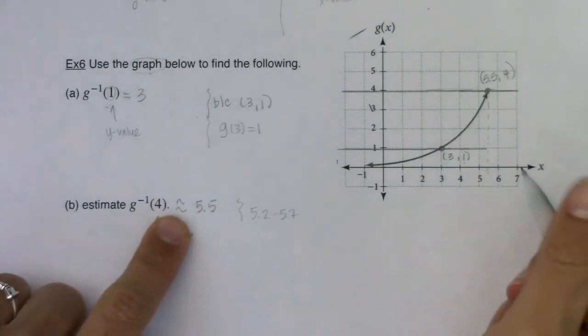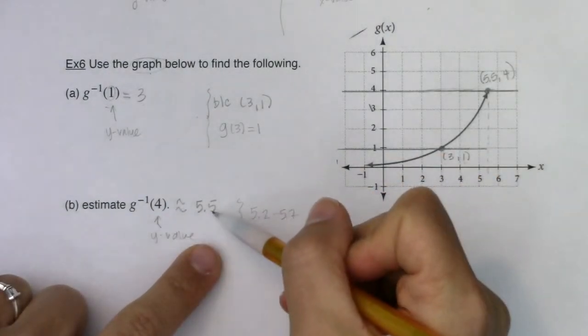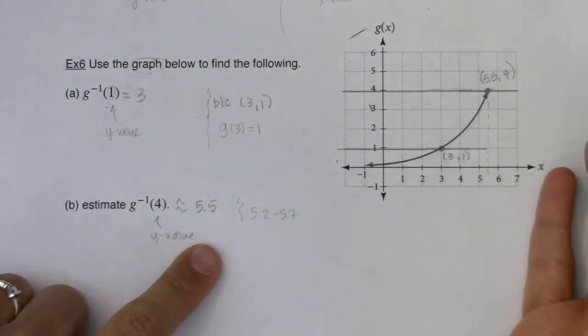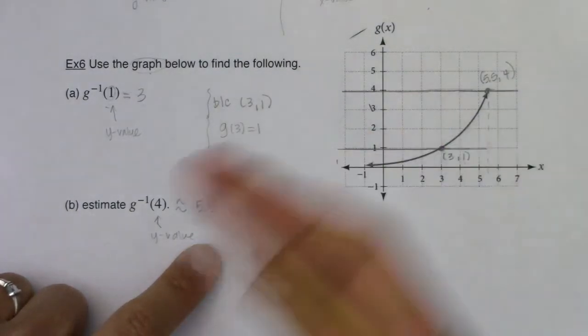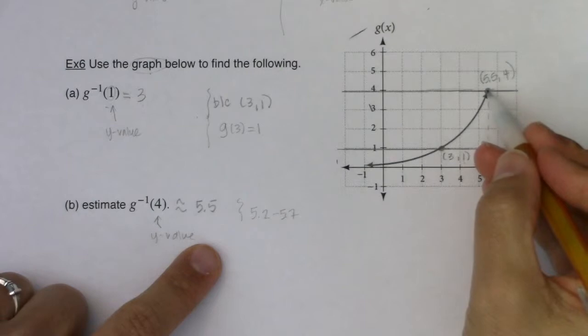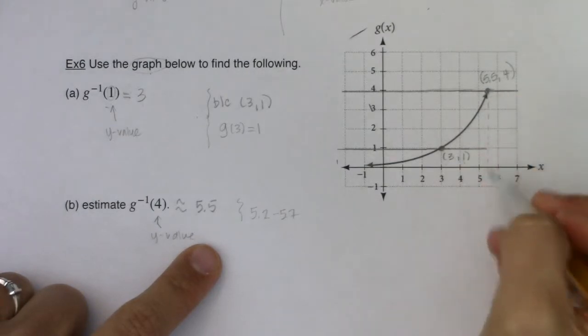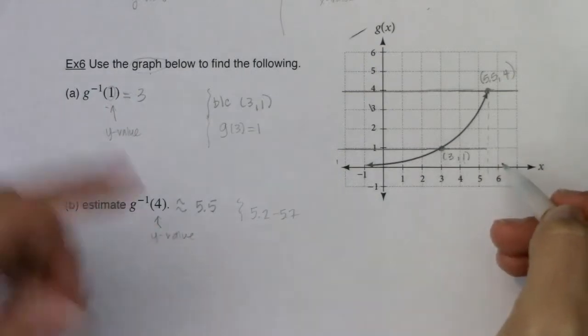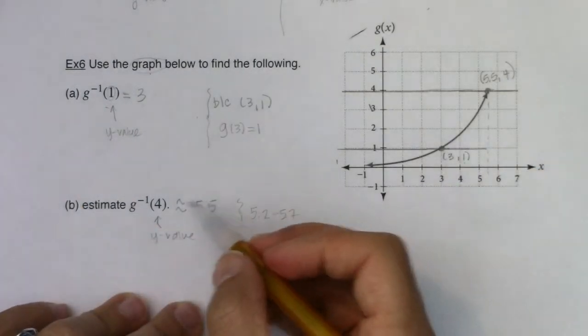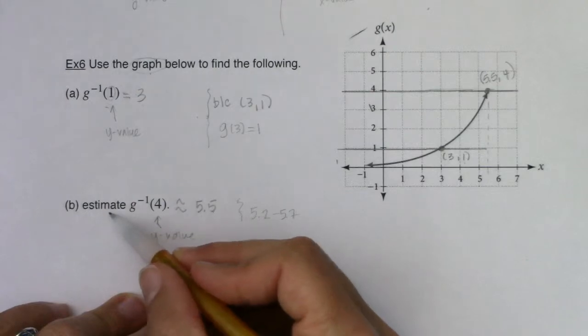So I'm estimating it. If this was on an exam, we might not all guess 5.5. Somebody might guess 5.4—great. 5.6—great. It just depends on how large this dot was that you made and how well you drew this down to the x-axis. So it's dependent on a few things, which is why we're estimating.